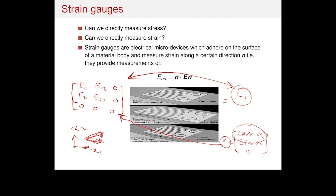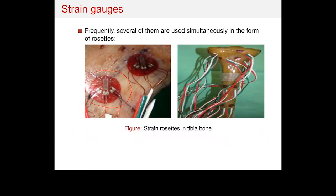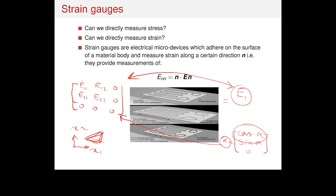The strain gauges come in rosettes, as mentioned, so you always have three gauges hooked together. From each rosette you get three measurements, and these three measurements are enough to identify E11, E12, and E22. So you are able to fully identify the strain tensor on the surface of the object you are trying to measure.